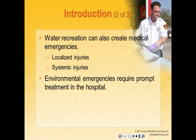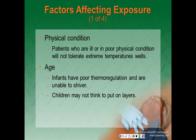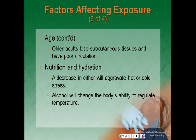There are a number of factors that affect how a person deals with heat or cold. Physical condition: patients who are ill or in poor physical condition will not tolerate extreme temperatures well. Age extremes do not tolerate temperature change as well — for example, infants are poor thermoregulators, they have the inability to shiver until about 12 to 18 months of age, and they have a larger surface area and smaller mass. Older adults lose subcutaneous tissue, have reduced insulation, suffer from poor circulation, and some medications may affect their ability to thermoregulate.